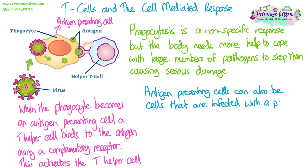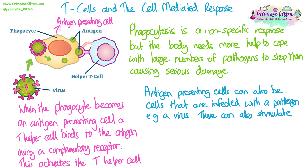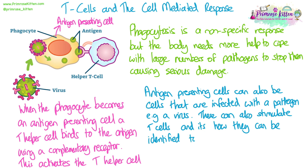It's not just phagocytes that can become antigen presenting cells — it can also be cells that have been infected with a pathogen. So if a cell has been infected with a virus, the virus will be inside the cell and the antigens of the virus can be presented onto the membrane of that cell, which can also stimulate the T helper cells. This is helpful because it's how those infected cells are identified and targeted to be destroyed by the immune system, destroying all the virus particles within them as well.